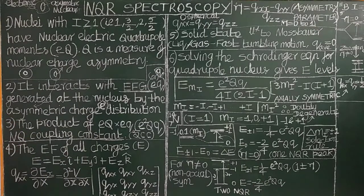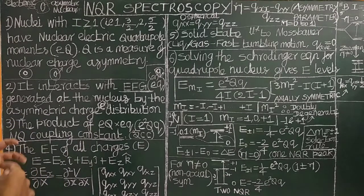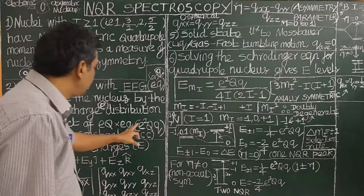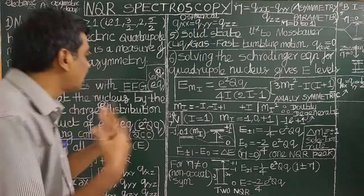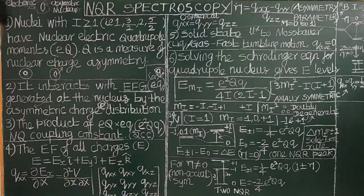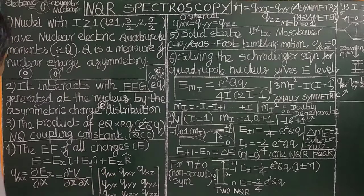The product of eQ and the electric field gradient — written as e²qQ — is called the nuclear quadrupole coupling constant. In this expression, e is the value of the electronic charge.